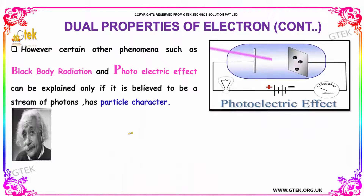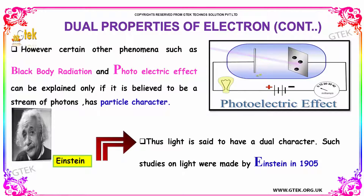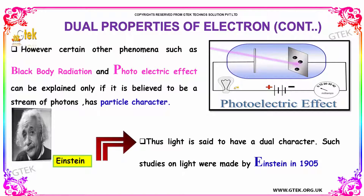However, certain other phenomena such as black body radiation and the photoelectric effect can be explained only if light is believed to be a stream of photons, which have a particular character — and that is a particle character. Thus, light is said to have a dual character.